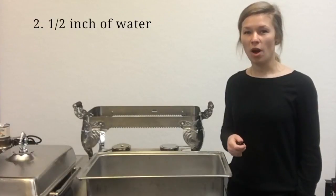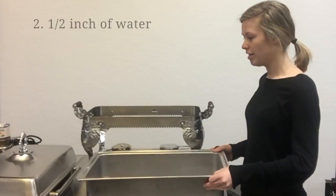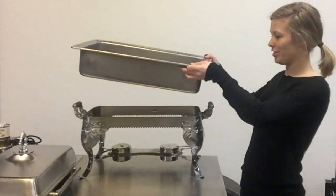Add about a half inch of water into your water pan and set it into your Royal Crest chafing dish.